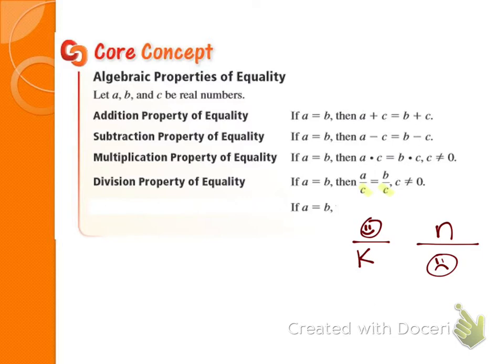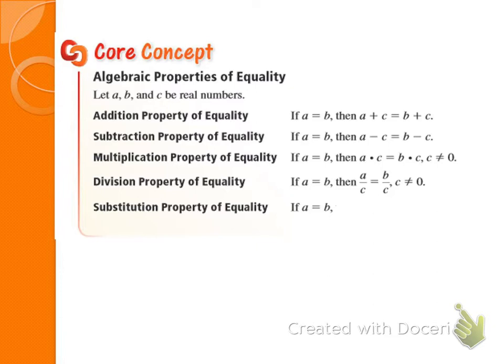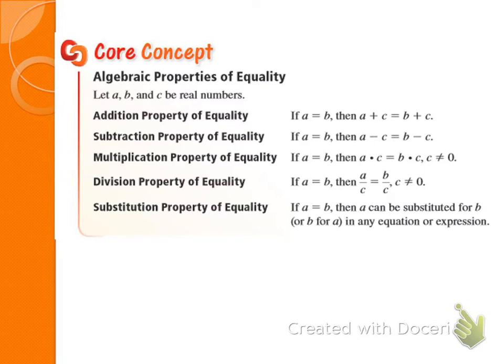The last one is the substitution property of equality. We used this all through Chapter 1: when we found X and wanted to find the measure of an angle, we plugged it in. That's the substitution property — A can be substituted for B, or B for A, in any equation or expression.